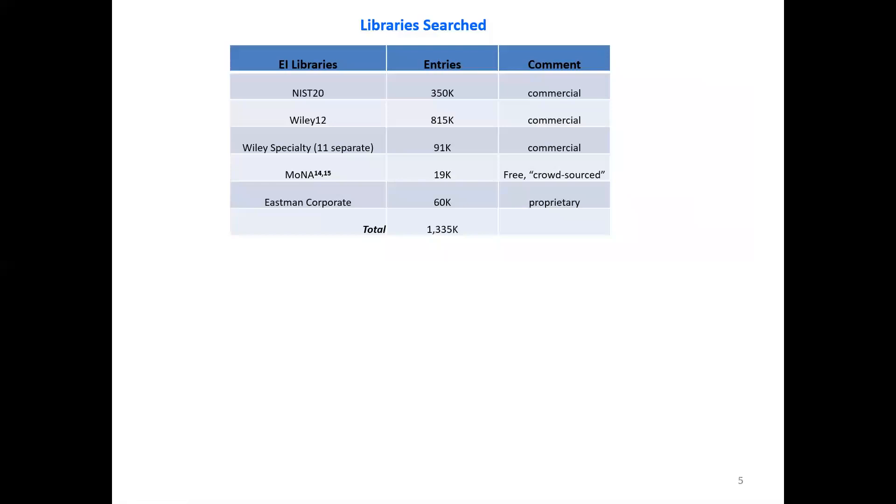What libraries can be searched? There's a variety of them that we could utilize. The NIST 20 library, which has about 350,000. The Wiley is another big library, but we also could search the Wiley specialty libraries, about 11 separate ones of them, depending on your needs.